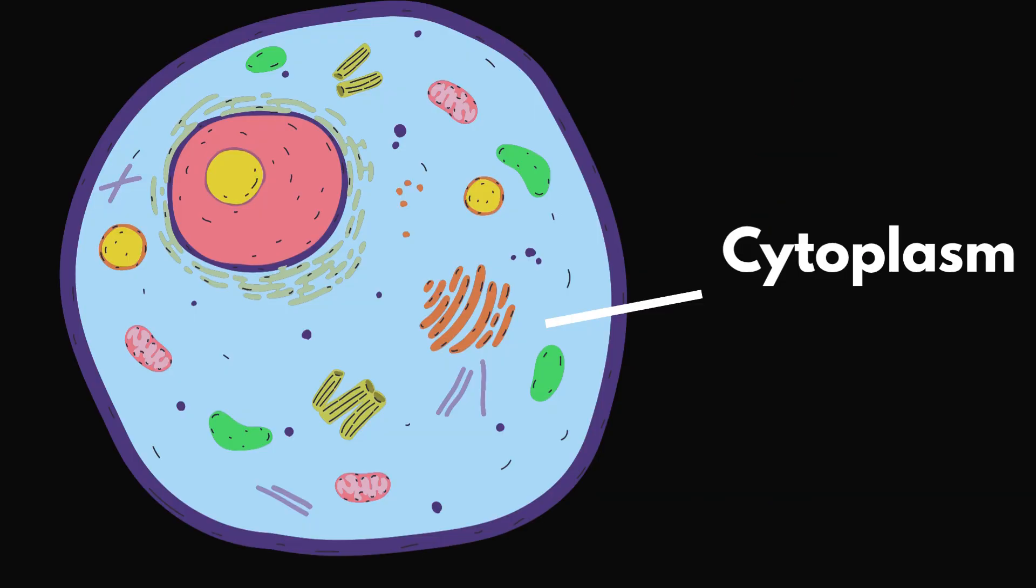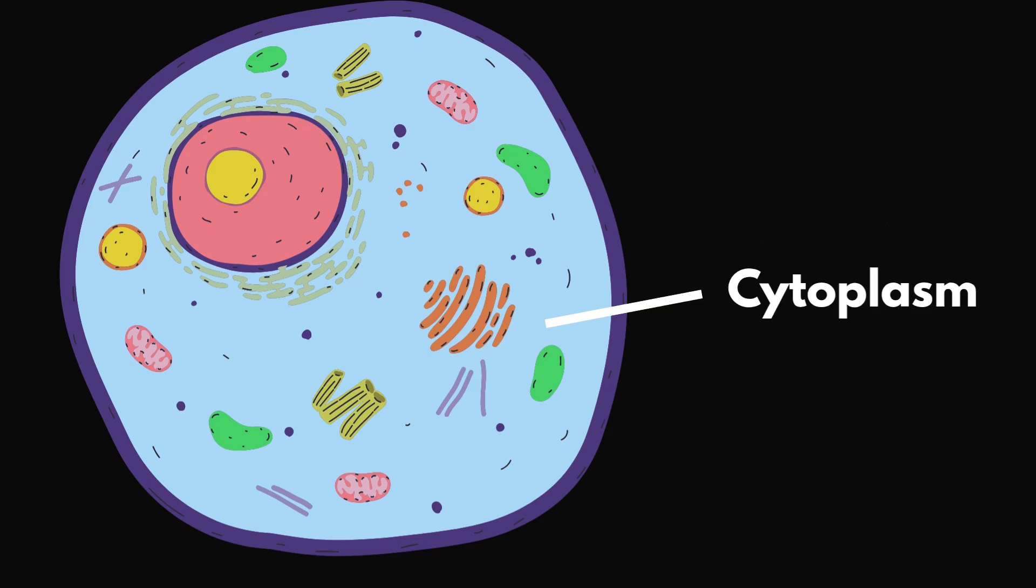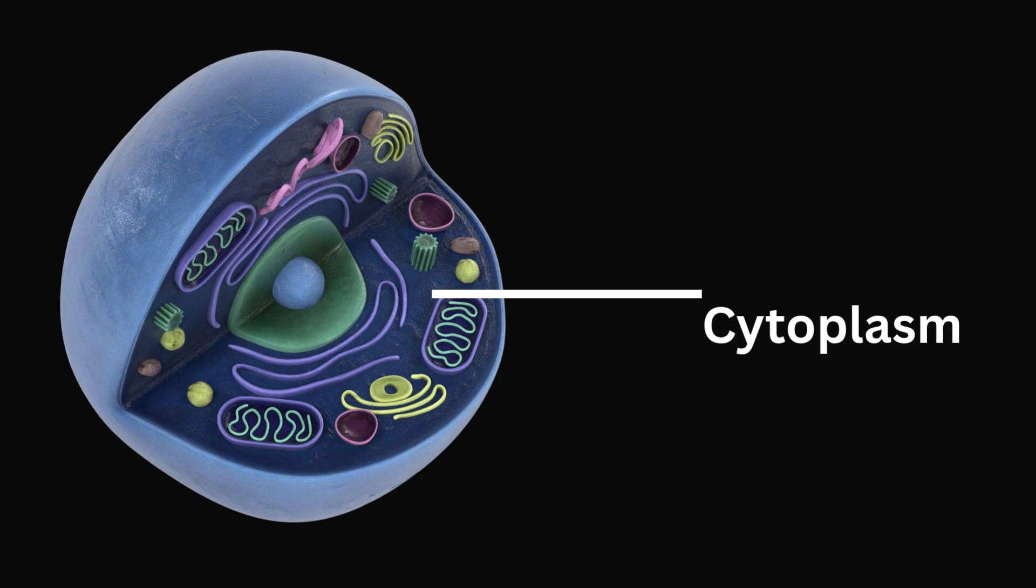Inside the cell, everything floats in a jelly-like fluid called the cytoplasm. Think of the cytoplasm as the roads, the sidewalks and the public spaces where all the organelles are placed and move around. It's not just a filler, it's where chemical reactions happen, where materials are transported and where the whole city stays alive and busy.